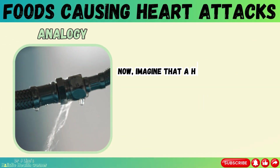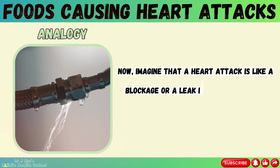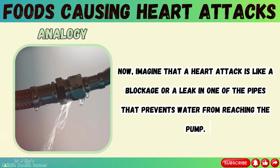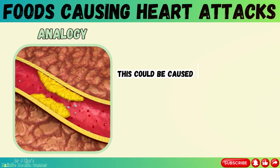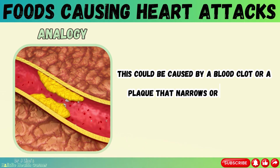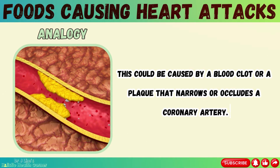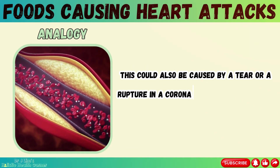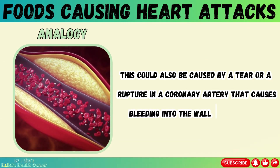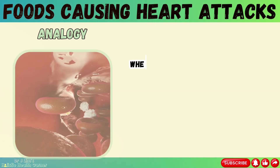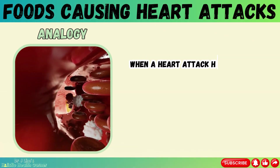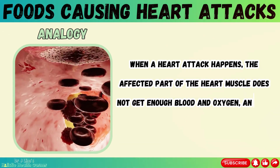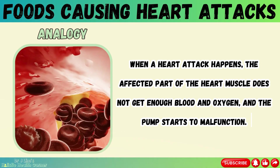Now, imagine that a heart attack is like a blockage or a leak in one of the pipes that prevents water from reaching the pump. This could be caused by a blood clot or a plaque that narrows or occludes a coronary artery, or by a tear or rupture in a coronary artery that causes bleeding into the wall of the artery. When a heart attack happens, the affected part of the heart muscle does not get enough blood and oxygen, and the pump starts to malfunction.